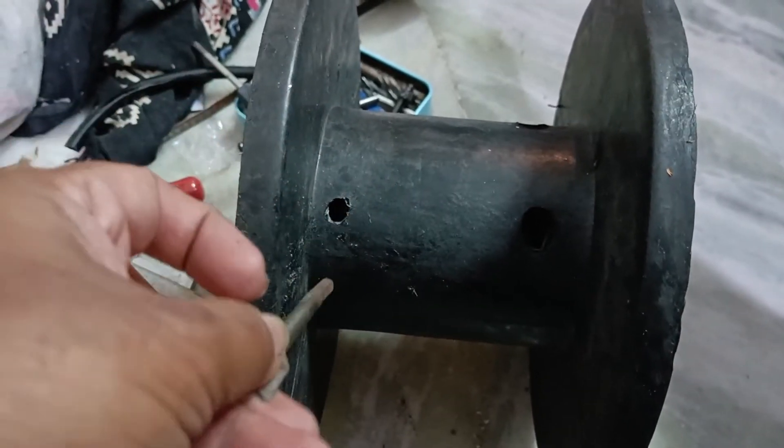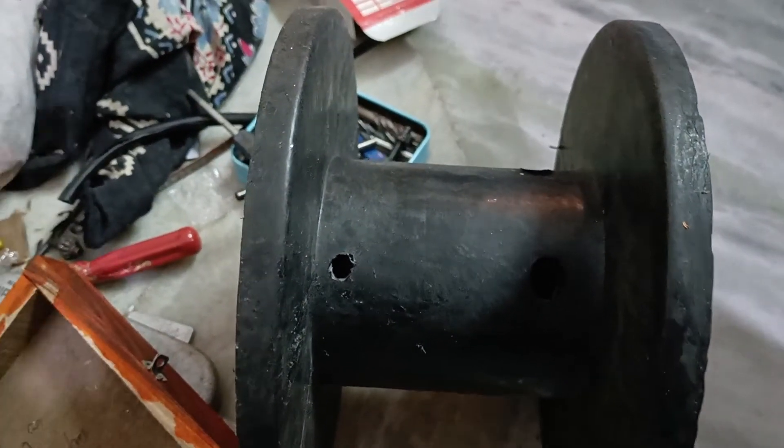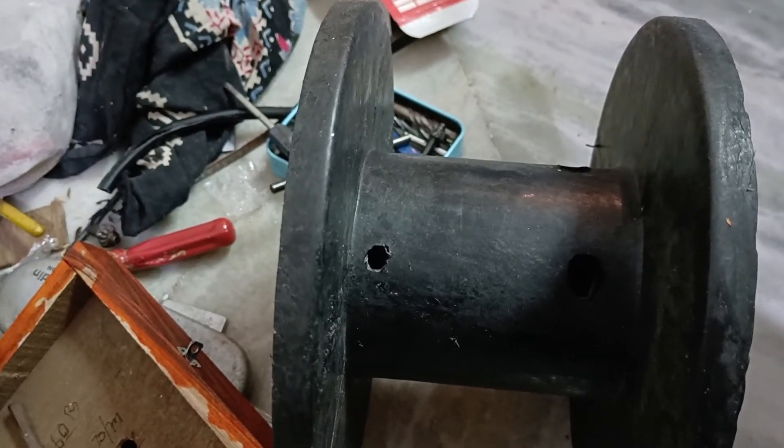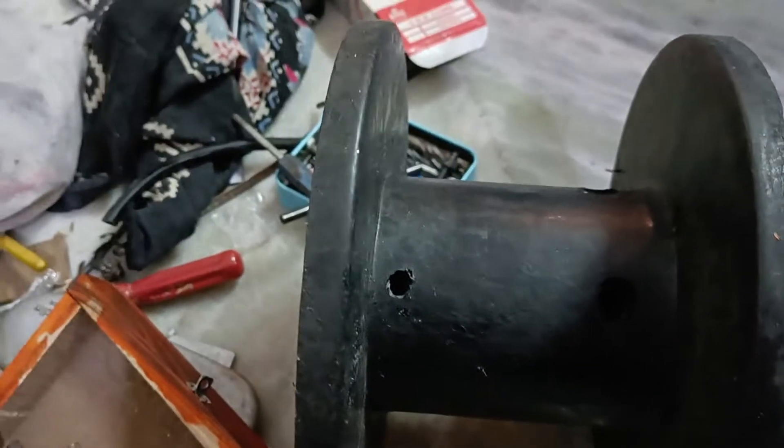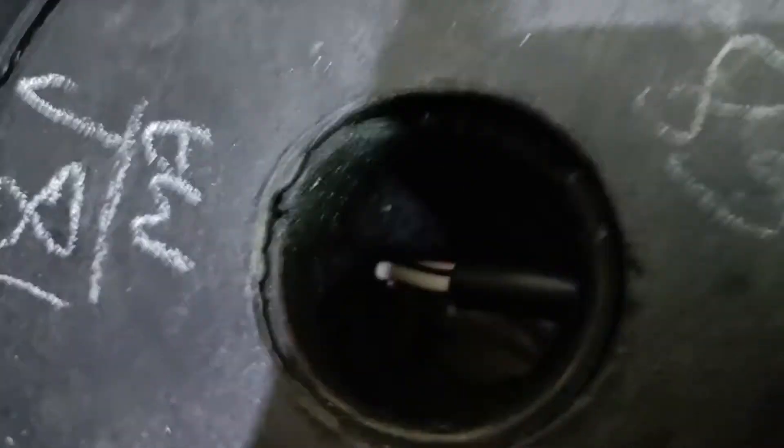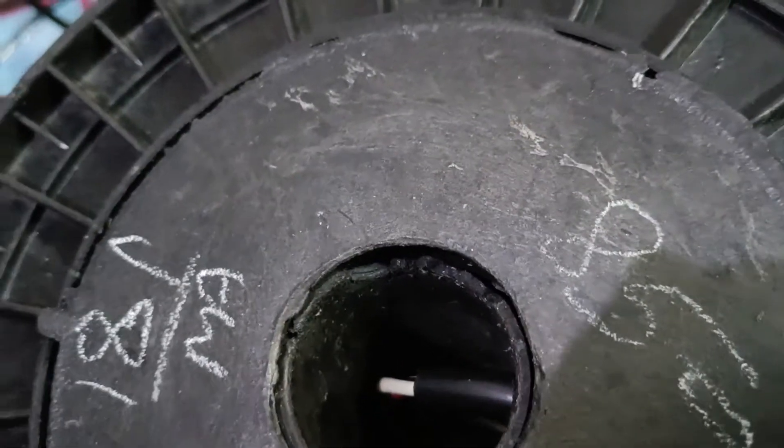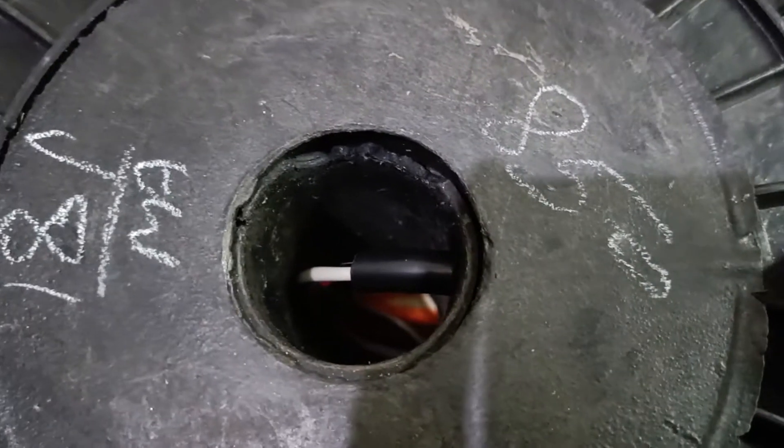You can use a hot nail to do this work. Through the angled hole that you have drilled, push the cable inside the reel like this so that it reaches the opposite side.